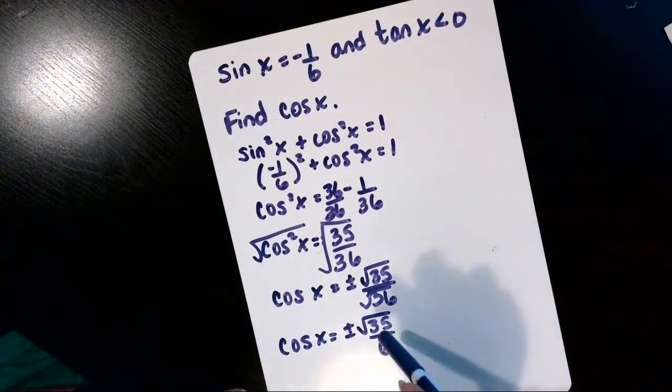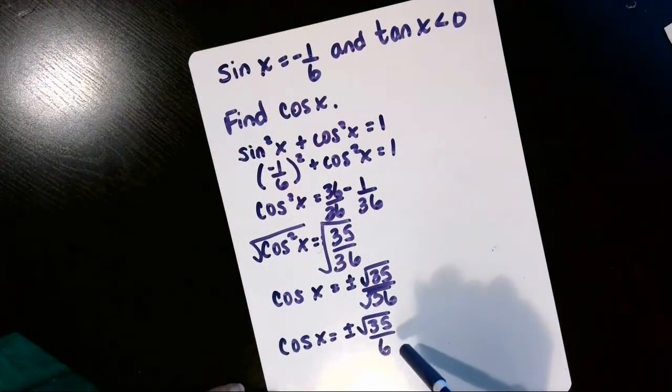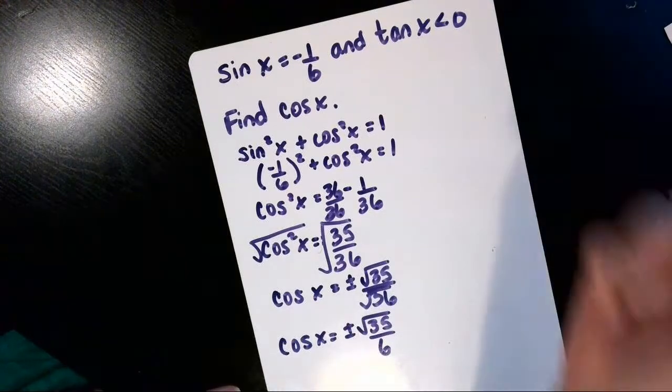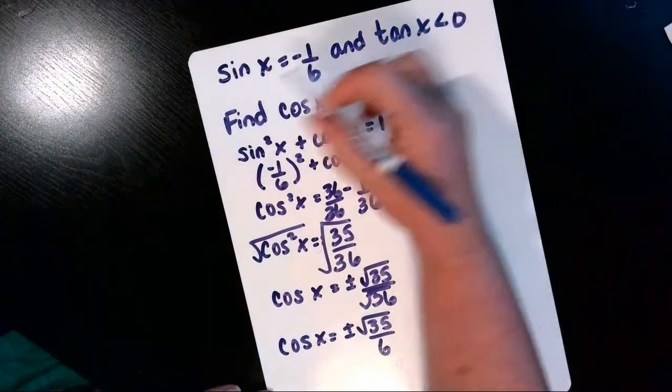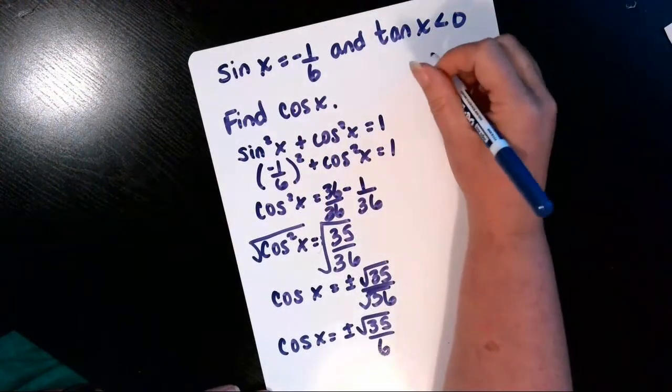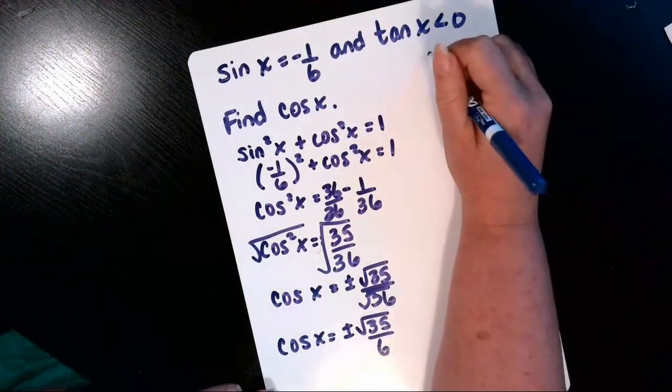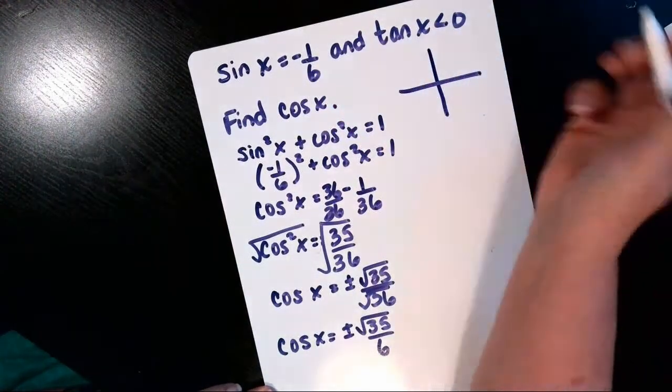And the last thing we need to do is figure out what quadrant this answer is in so that we know whether we should keep the positive or the negative answer, because it can't be both. So if we go back to our given information, we know that the tangent is negative and the sine is negative. So what quadrant are we in?